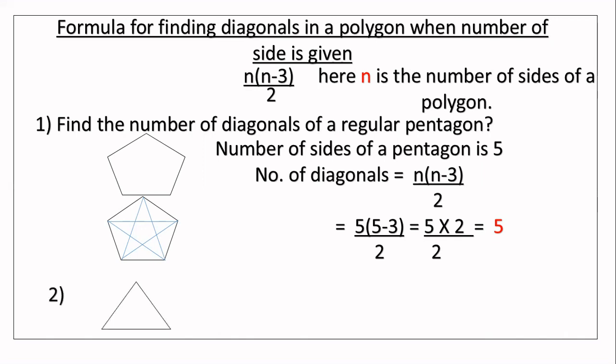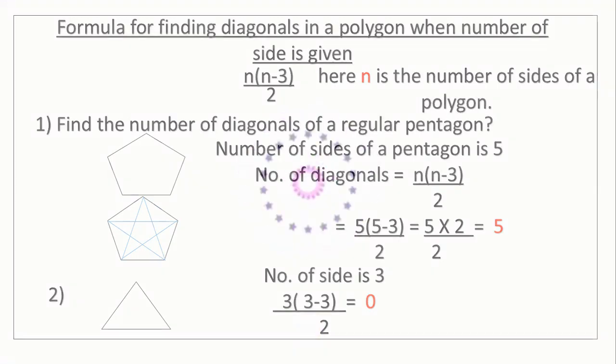Next question: how many diagonals are in an equilateral triangle? The number of sides is 3, so using the formula n(n − 3) ÷ 2 = 3(3 − 3) ÷ 2 = 3 × 0 ÷ 2 = 0. So there are no diagonals in a triangle — we cannot draw a diagonal in a triangle. Hope you all understood. We will do more questions in the next class. Thank you.